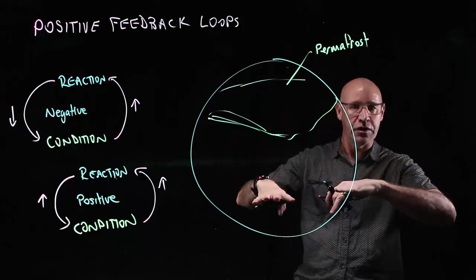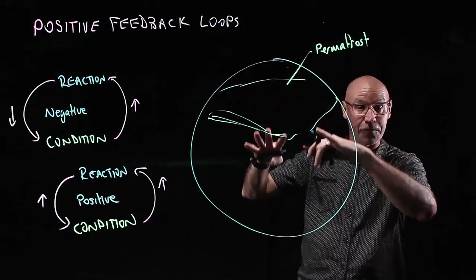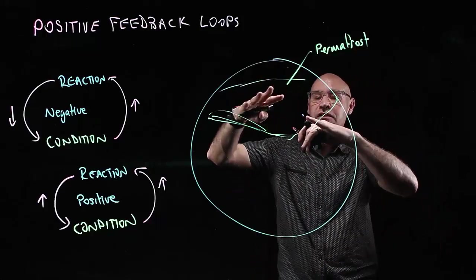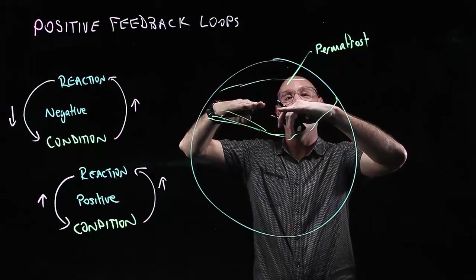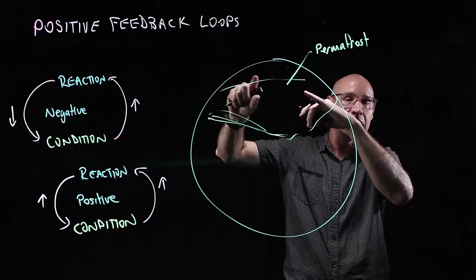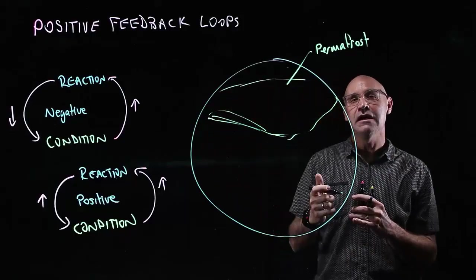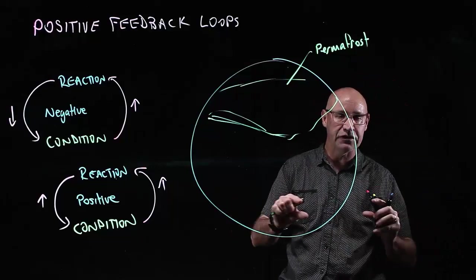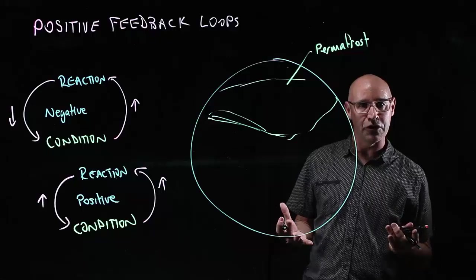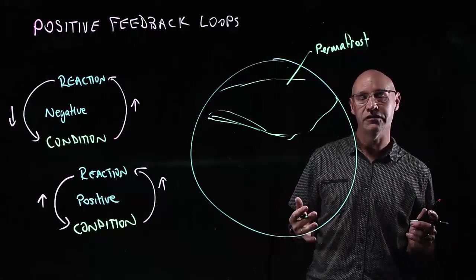As the global temperatures have increased, this permafrost is defrosting. The part that's still permanently frozen is moving higher and higher up. This vegetation - low grasses and such - is now being exposed for the first time in thousands of years.